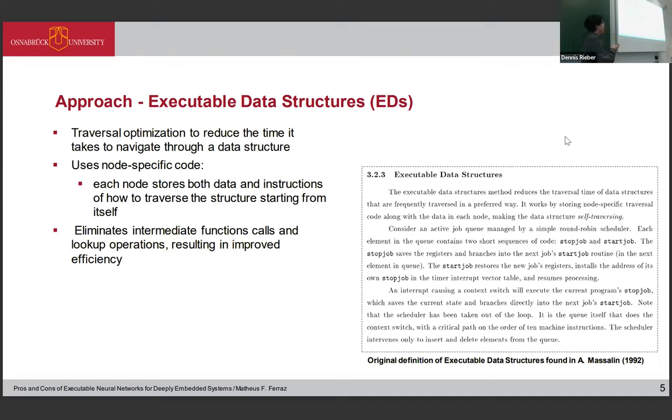What is an Executable Data Structure? It's an approach to optimize the traversal time of data structures in general. Instead of traversing an executable data structure using for loops or recursive functions, you try to store both the data and the structure inside node-specific code. For each node of the structure, they have their own code of how to traverse itself, it becomes self-traversing. This eliminates intermediate component calls, lookup operations, and results in improving performance.